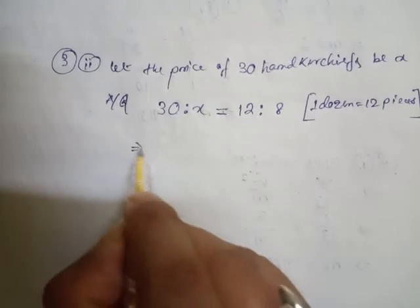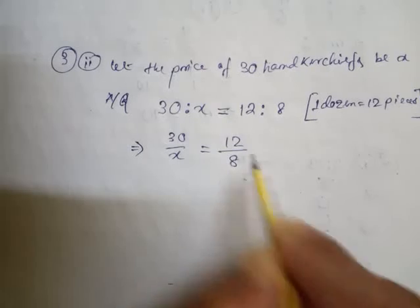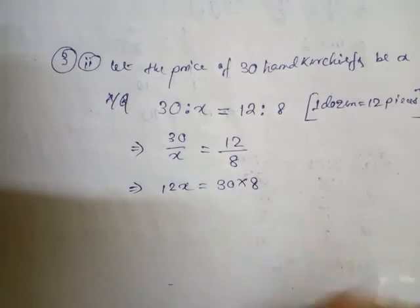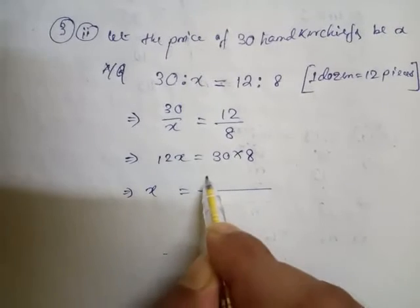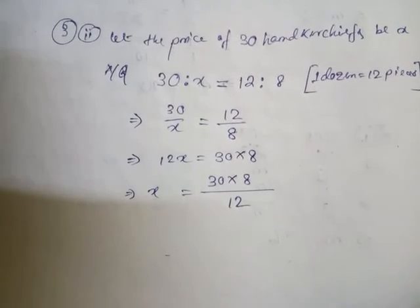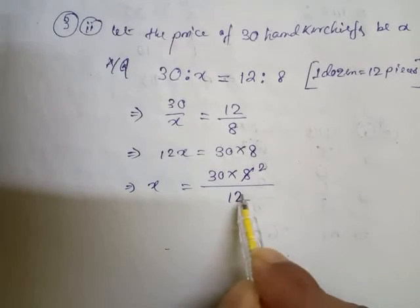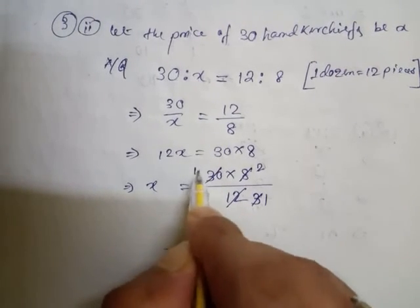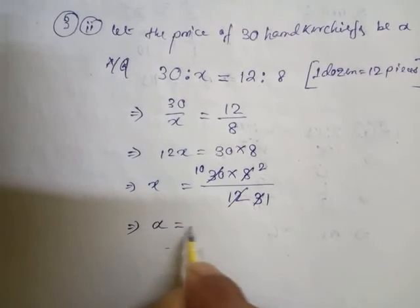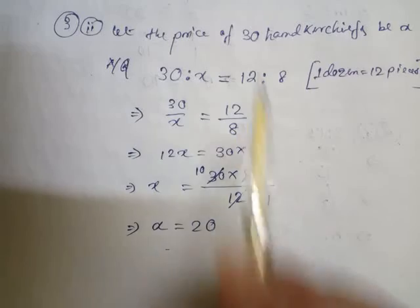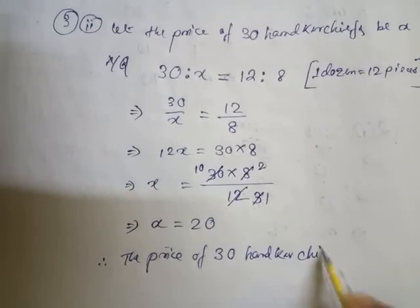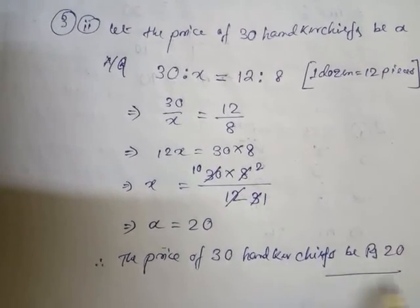So 30 by x equals 12 by 8. We go for cross multiplication: 12x equals 30 into 8. So x equals 30 into 8 divided by 12. Both 8 and 12 are multiples of 4, simplifying to 30 into 2 divided by 3. Then 30 and 3 are multiples of 3, giving 10 into 2 equals 20. Therefore, the price of 30 handkerchiefs is rupees 20.